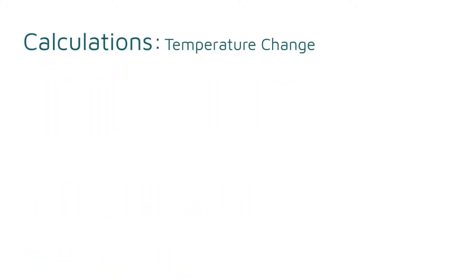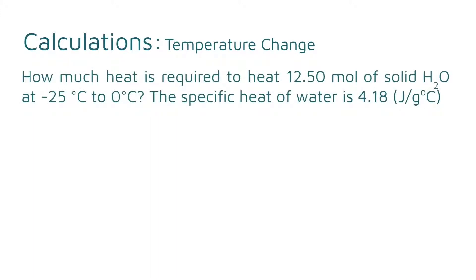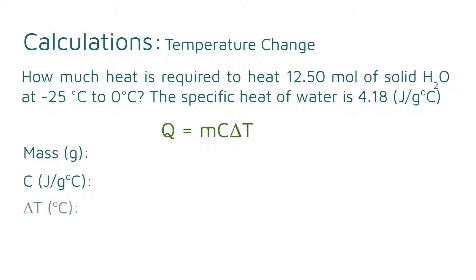A question could ask you how much heat is required to heat 12.5 moles of solid H₂O at negative 25 degrees Celsius to 0 degrees Celsius. The specific heat of water is 4.18 joules over grams times Celsius. This is a temperature change problem, so you're going to use the temperature change equation. This requires you to find three things: mass, specific heat, and change in temperature.